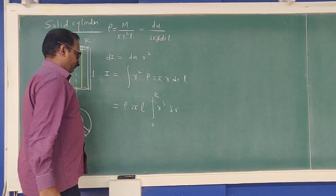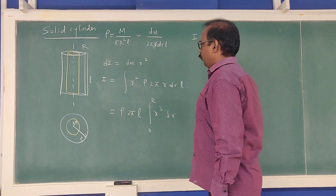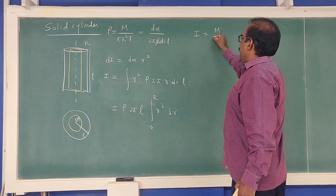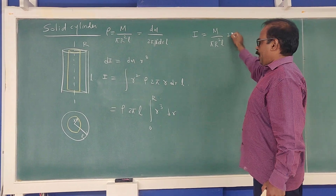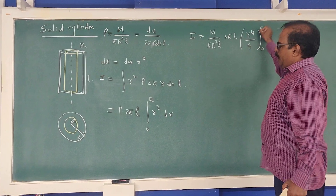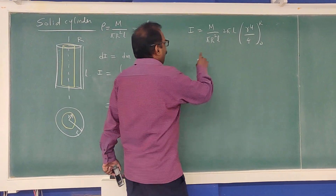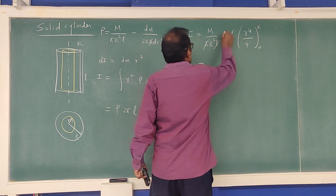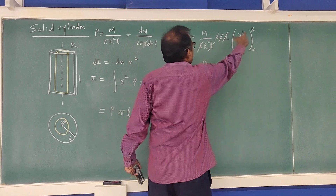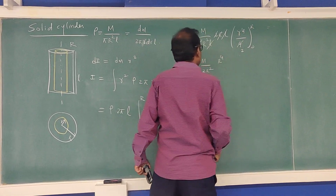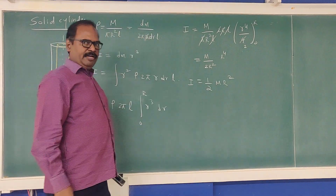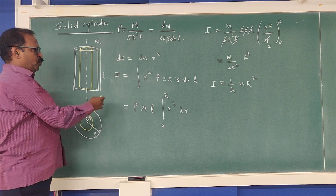Substituting ρ = M/(πR²L), the πR²L terms cancel appropriately, and the final answer for the moment of inertia of a solid cylinder about its own axis is I = ½MR². This is the moment of inertia of a solid cylinder about its own axis.